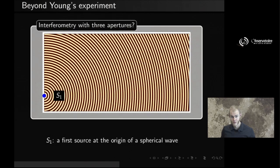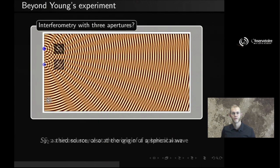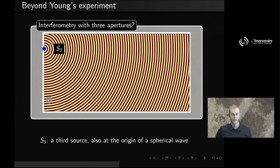The setup is very much like the previous case. We have the first source S1, the second source S2, and the third source S3. Now, with three sources, you can form three pairs of sources that are going to interfere with one another.